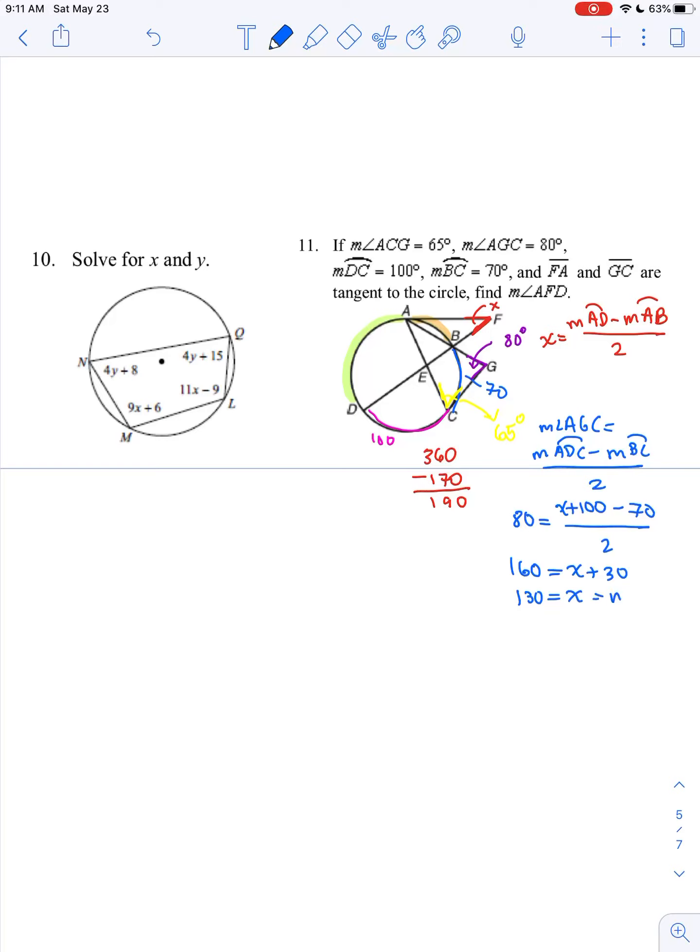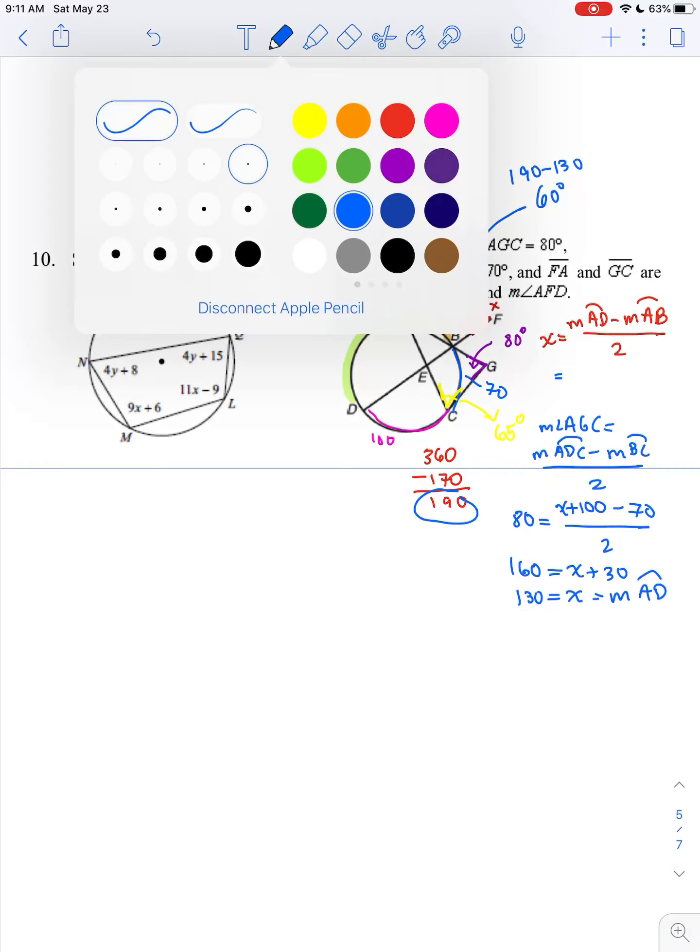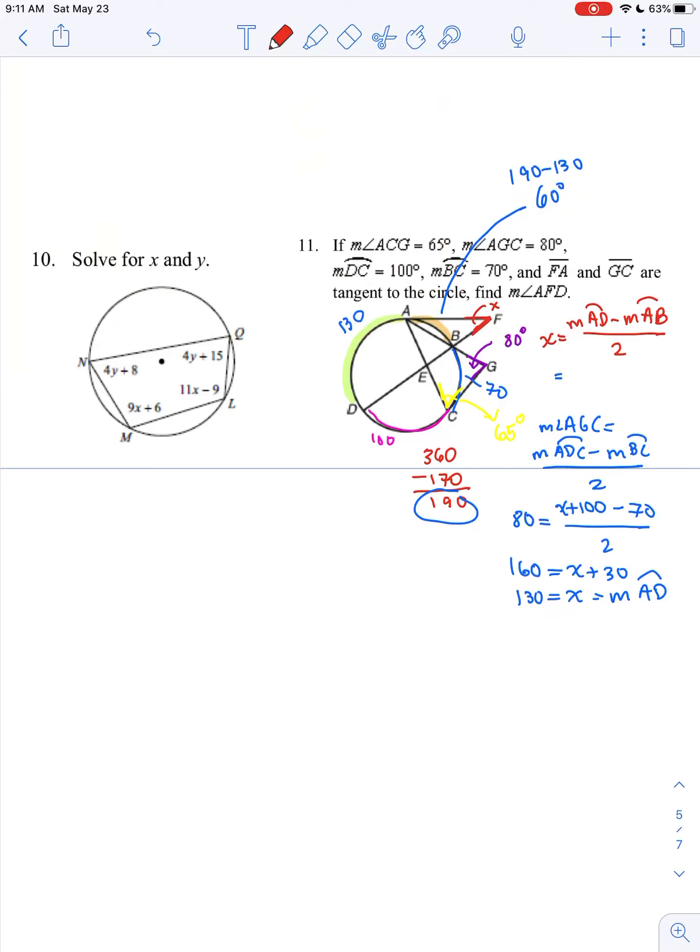X to begin with was arc AD, which is the measure of arc AD. So I go back to the picture, I do now know that this is 130. If I know that the sum of AD and AB is 190, that makes arc AB equal to 60 degrees, the difference between 190 minus 130.